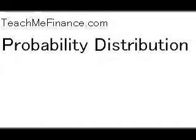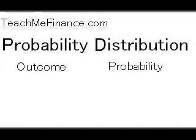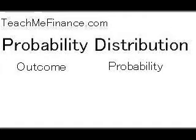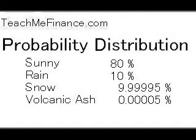In a probability distribution, you just make two columns, one for outcome and the other for probability.